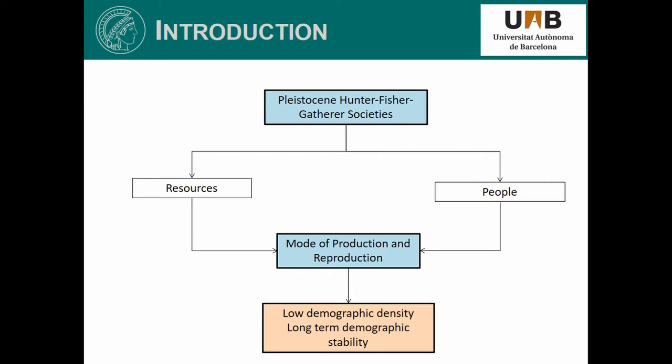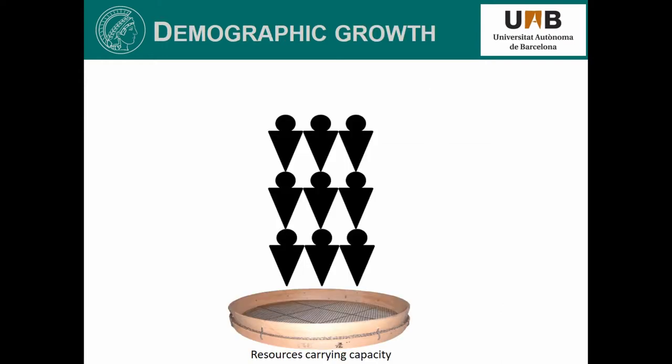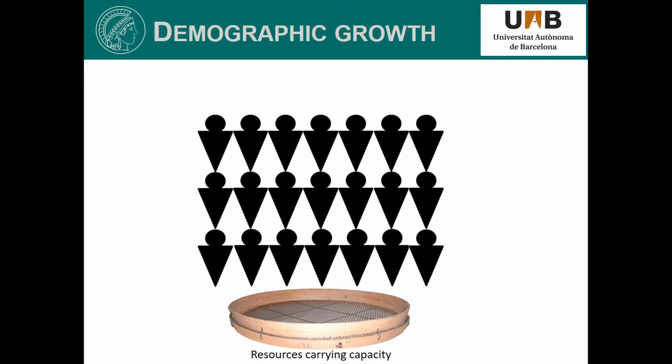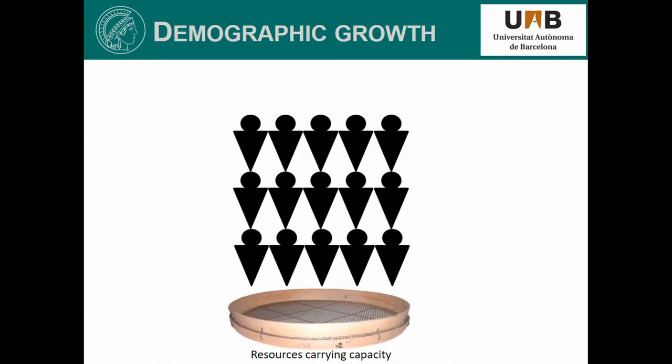The first point to consider is the interrelation between the mode of production and human reproduction, as it is not possible to study one without the other. In principle, Pleistocene hunter-gatherer societies, in the best of cases, had little control on the reproduction of natural resources, defining inevitably a strong dependence on resource availability. If we consider that these populations followed a natural fertility, it would seem that mostly mortality rate would have been in charge of balancing the carrying capacity of the environment with the population's pressure.